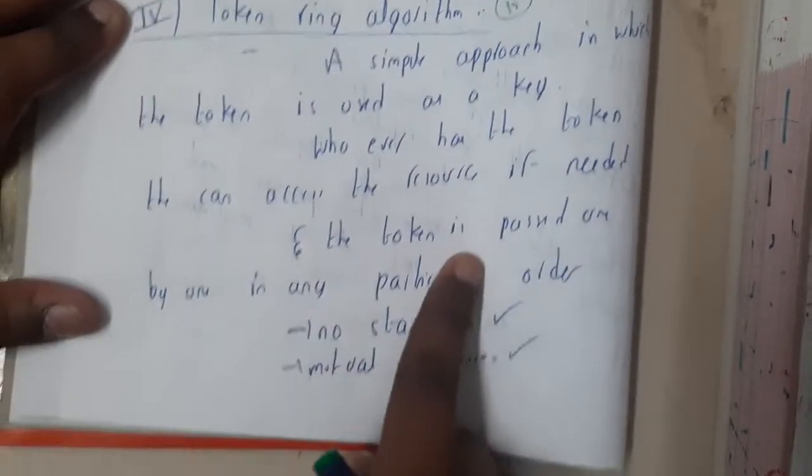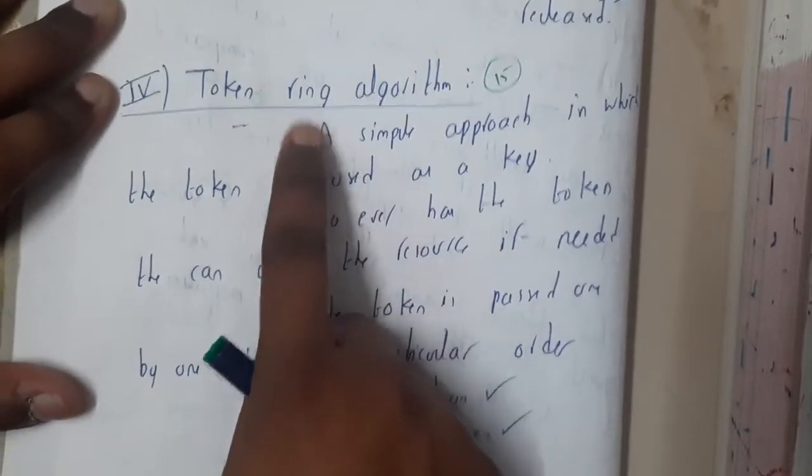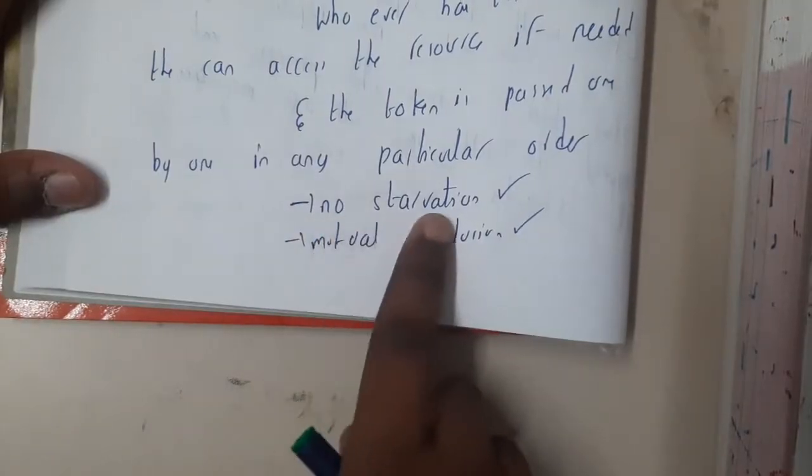The token is passed on one after the other in a particular order. That is the reason why we call it a ring. Here there will be no starvation and mutual exclusion is achieved.